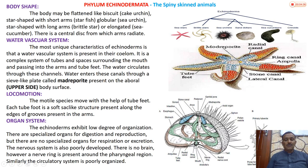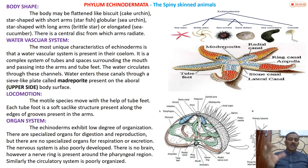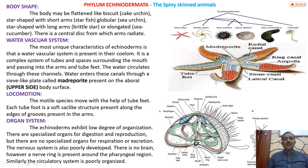The most unique characteristic of echinoderms is the water vascular system - a complex system of tubes and spaces surrounding the mouth that passes into the arms and tube feet. Water circulates through these channels. Water enters through a sieve-like plate called the madreporite, passes into radial canals, and from these canals tube feet emerge. Through these tube feet water exits jet-like, and this system also enables locomotion.